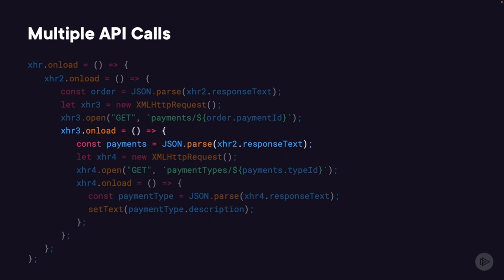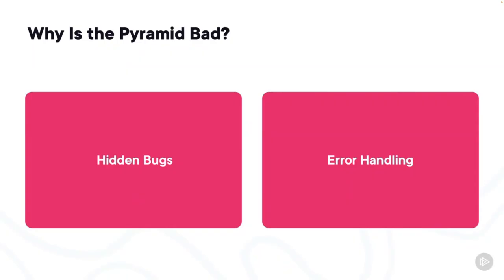In fact, there is actually a bug in this code. Inside the xhr3 onload function, instead of parsing the results that come back, you're actually parsing the results that came back on xhr2. It's a simple mistake, and one that when you see it in your code you're likely to chide yourself for being careless. But it's also a common mistake — in preparation for this course, I did this exact thing in some of the code samples.